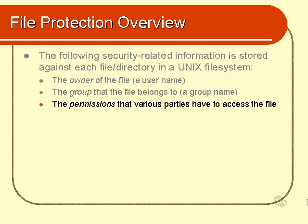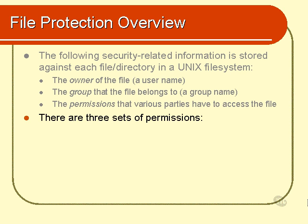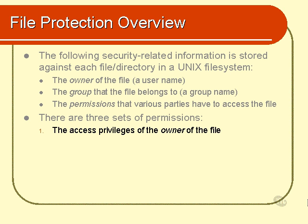Let's look at the various permissions that are attributable to any given file or directory. There are three sets of permissions for each file. First, there are the access privileges of the owner of the file — what is the owner allowed to do to the file?